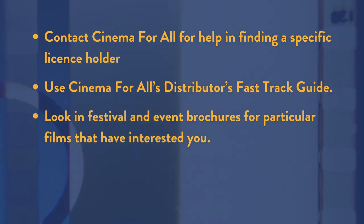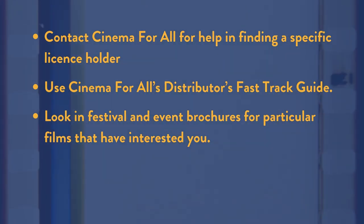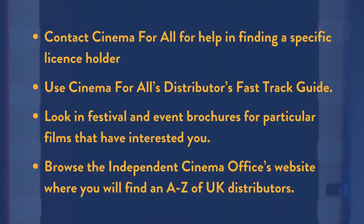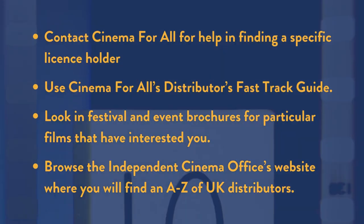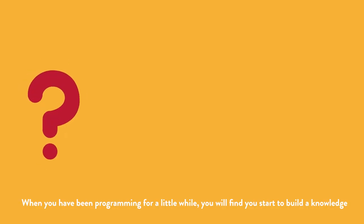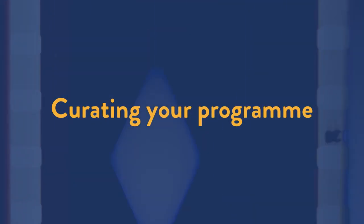Look in festival and event brochures for particular films that have interested you, and browse the Independent Cinema Office's website where you will find an A to Z of UK distributors. When you've been programming for a little while, you will find you start to build a knowledge of which distributor is likely to hold the film license for certain films.